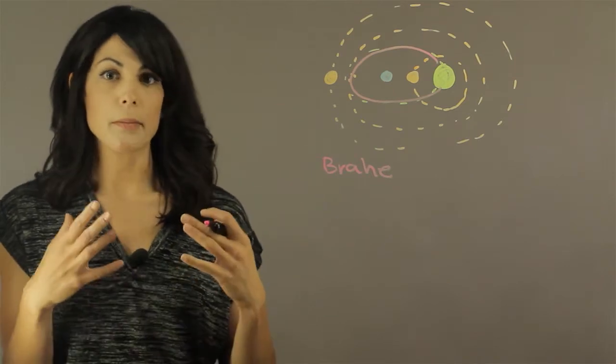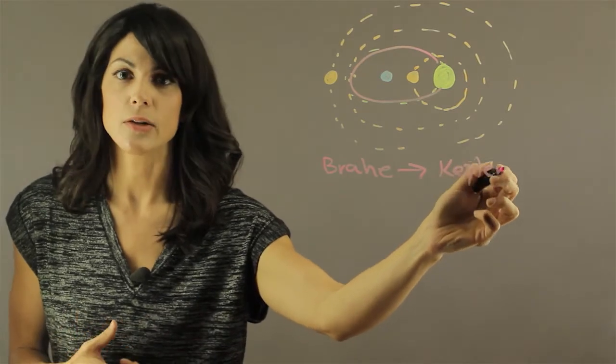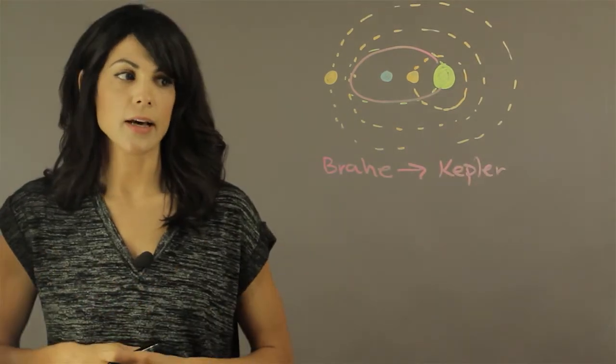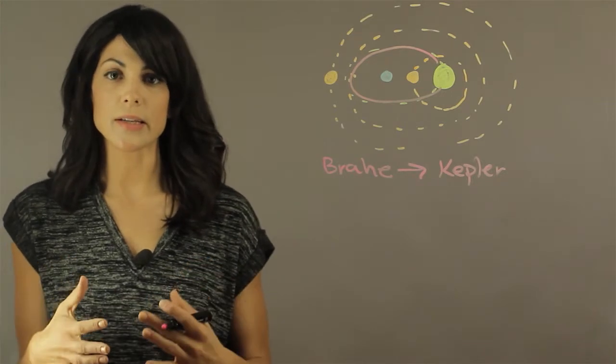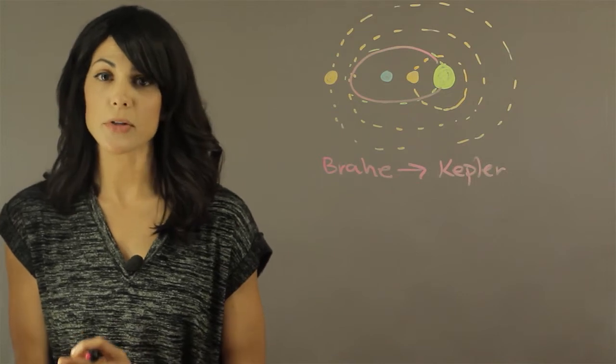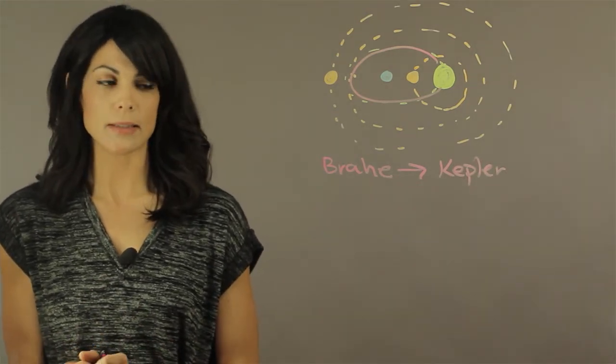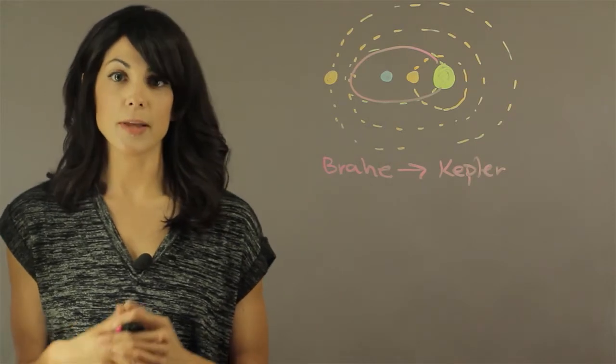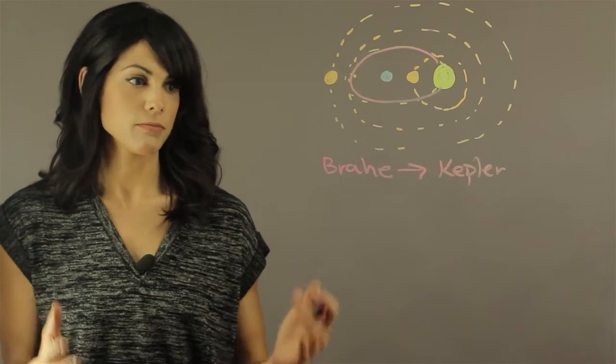But then came Kepler, who took all of Brahe's work and did all the data analysis himself. He came up with ideas that were the first mathematical understanding of planets. Kepler is the first scientist who really looked at the motion of planets and discovered the planetary laws. We still swear to those three laws.